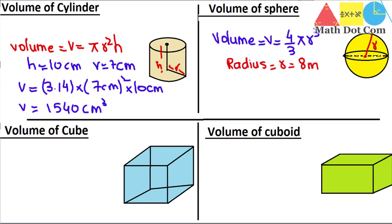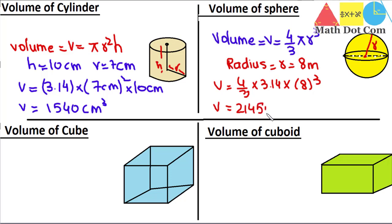For example, if r = 8 meters, then V = (4/3) × 3.14 × 8³, which gives approximately V = 2145 cubic meters. Since the radius was given in meters, the volume unit must be cubic meters. This is the volume of the sphere — you only need the radius to find it.